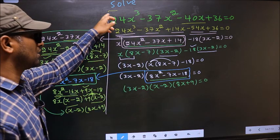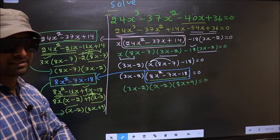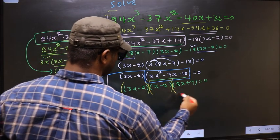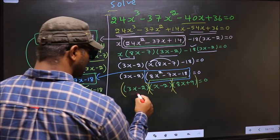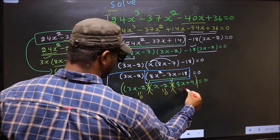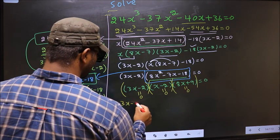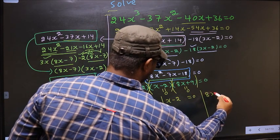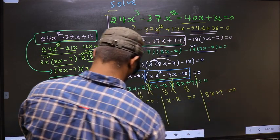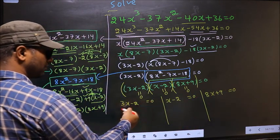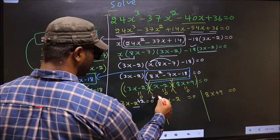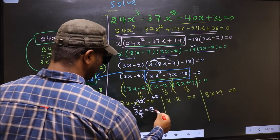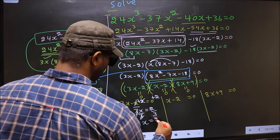They told us to solve, which means we should get the values of x. We got a product of brackets equal to 0, so we equate each bracket to 0. For 3x minus 2 equal to 0: add 2 to get 3x equal to 2, then divide by 3 to get x equal to 2 by 3.